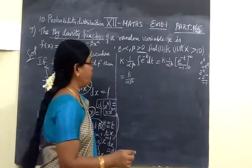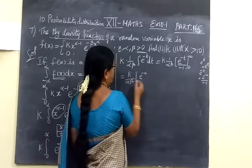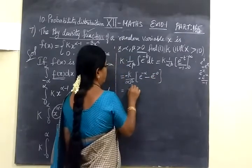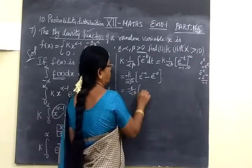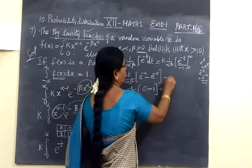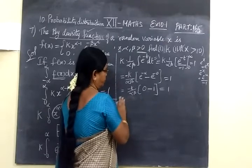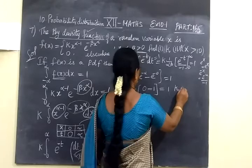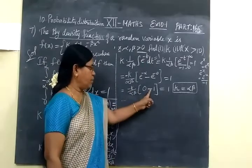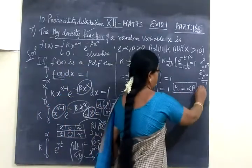So the result is K by αβ, then E power minus infinity. Taking the minus outside and applying limits: minus K by αβ times [e^(−∞) − e^0] equals minus K by αβ times [0 − 1], which gives K by αβ equal to 1. Therefore K equals αβ. So we have found the first answer: K equals αβ.